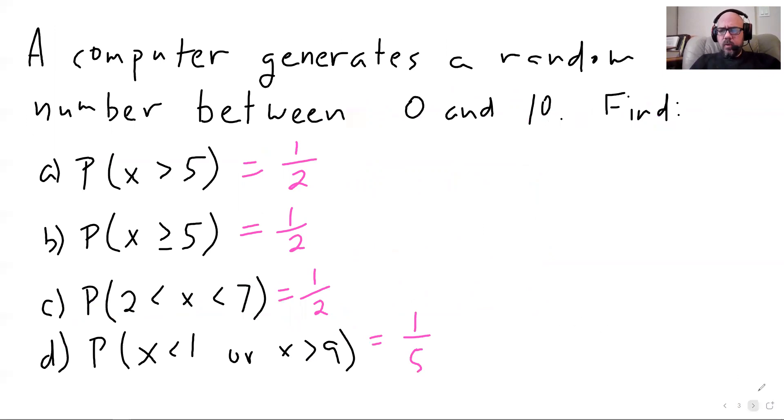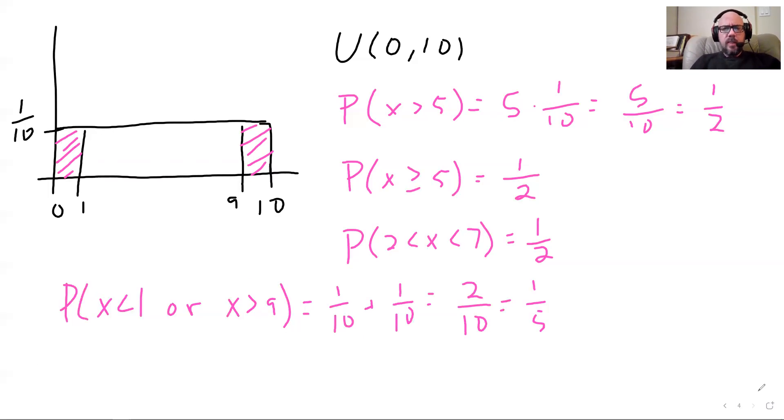That's pretty much it for uniform distributions. There's really not much to say about them. They're pretty straightforward. They really are the easiest example, pretty much. Although I do actually want to say one more thing about uniform distributions.